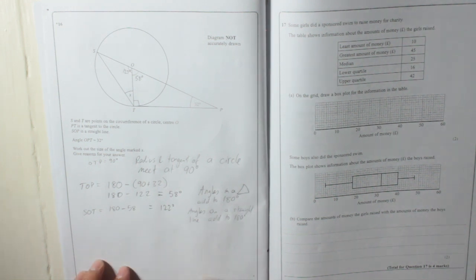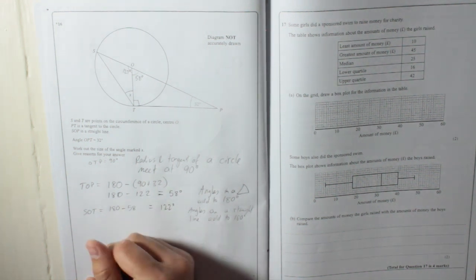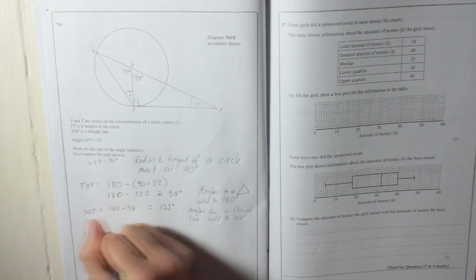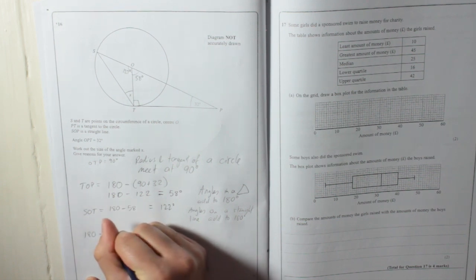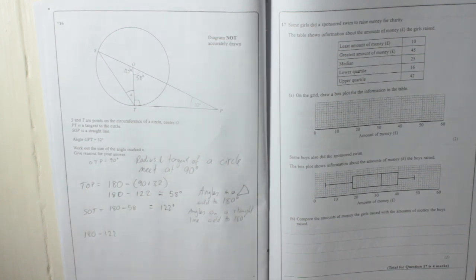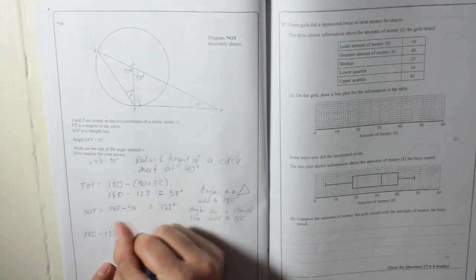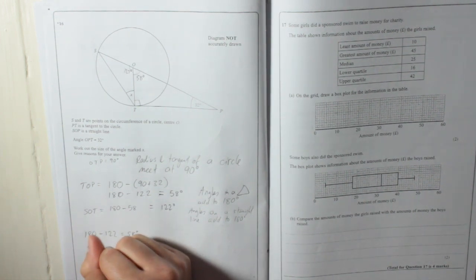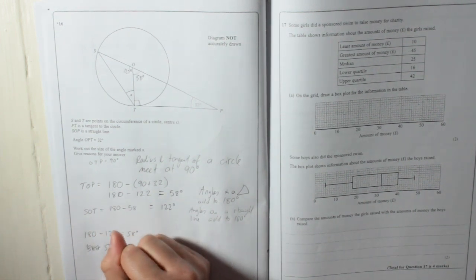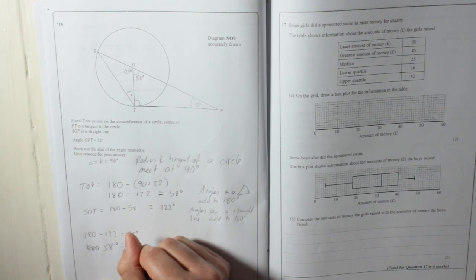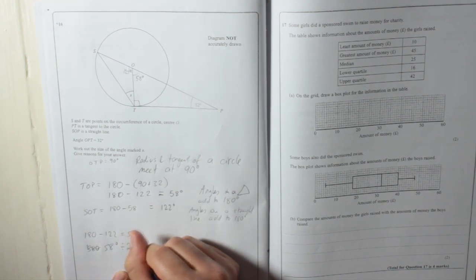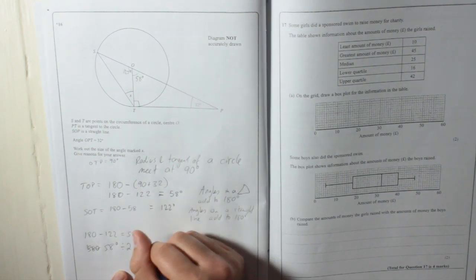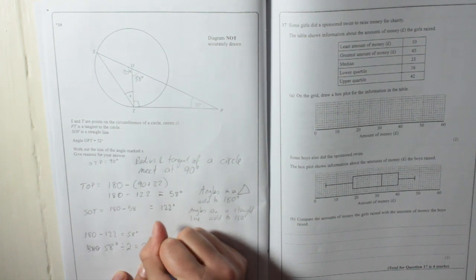Now I'm going to find X by doing 180 take away 122, which again is 58 degrees, and then dividing it by 2. 58 degrees divided by 2 is equal to 29 degrees.